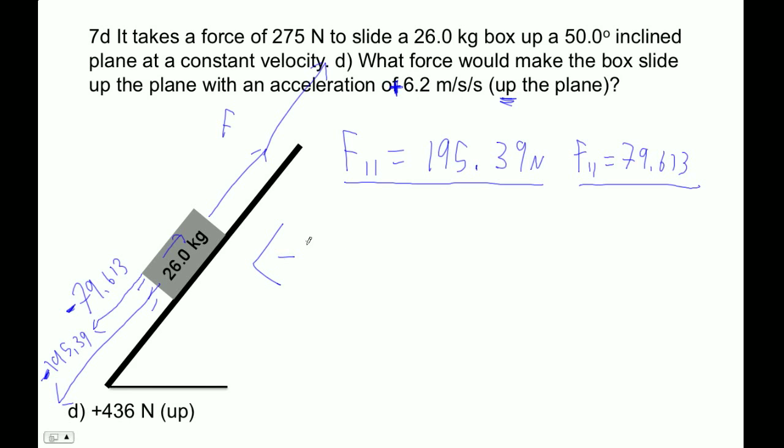We just go negative 195.39 minus the friction force. Since it's sliding up the plane, friction is down the plane. And then, let me just say plus the unknown force, is equal to 26 times positive 6.2. This is positive because it's up the plane. The unknown forces, you just make those always positive. The friction force is negative because it's sliding up.